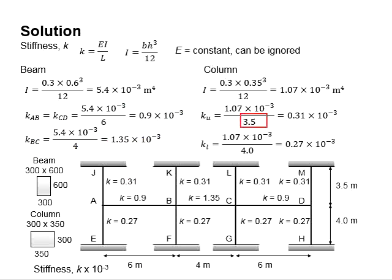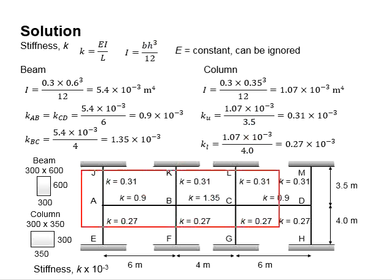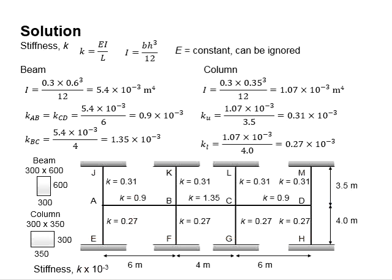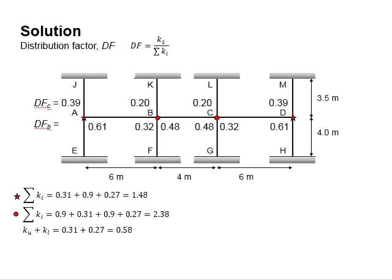The same process applies to the columns. The stiffness values k for the columns and beams are summarized, expressed as functions of 10 to the power of negative 3.